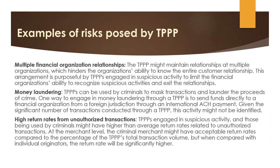Examples of risks posed by TPPs include multiple financial organization relationships. A TPP might maintain relationships at multiple organizations, which hinders each organization's ability to know the entire customer relationship. This arrangement is purposefully used by TPPs engaged in suspicious activity to limit the financial organization's ability to recognize suspicious activity and exit the relationships.